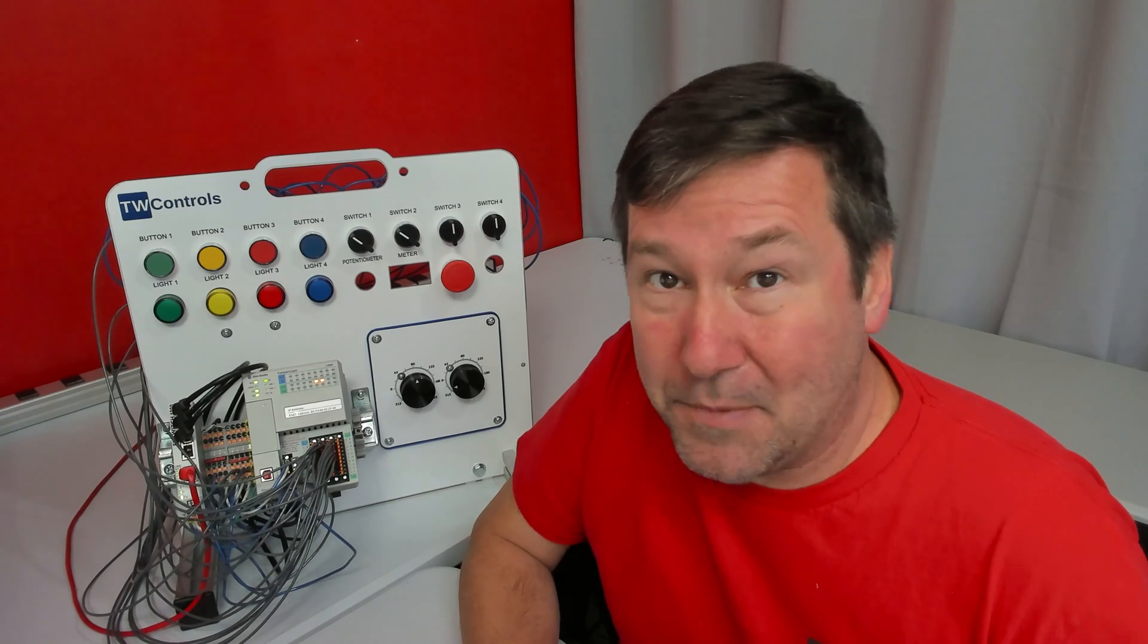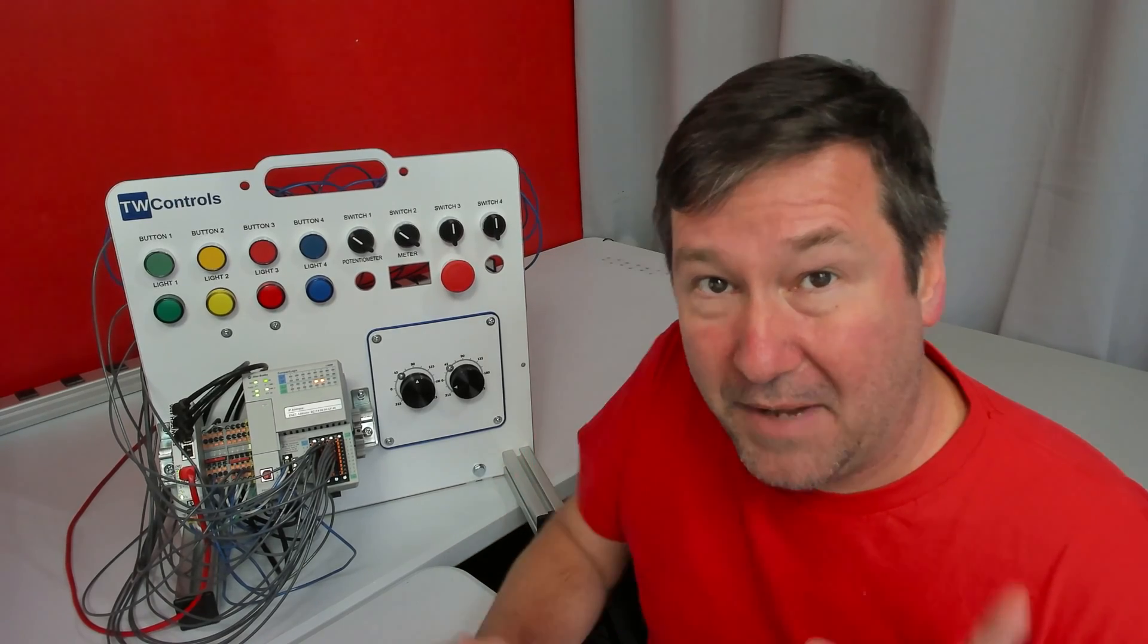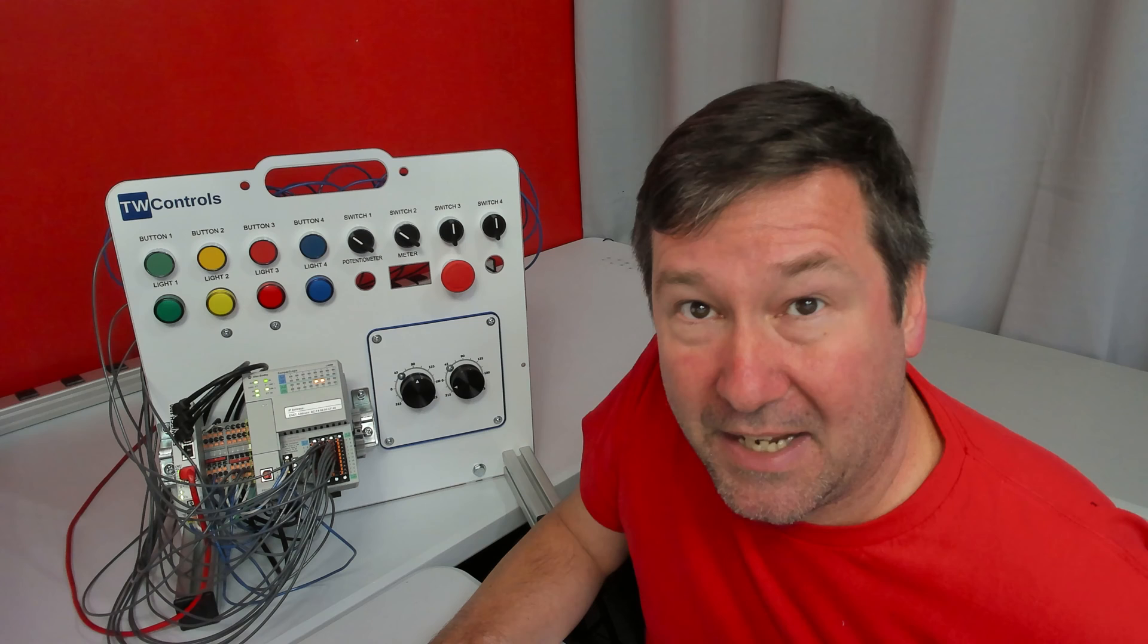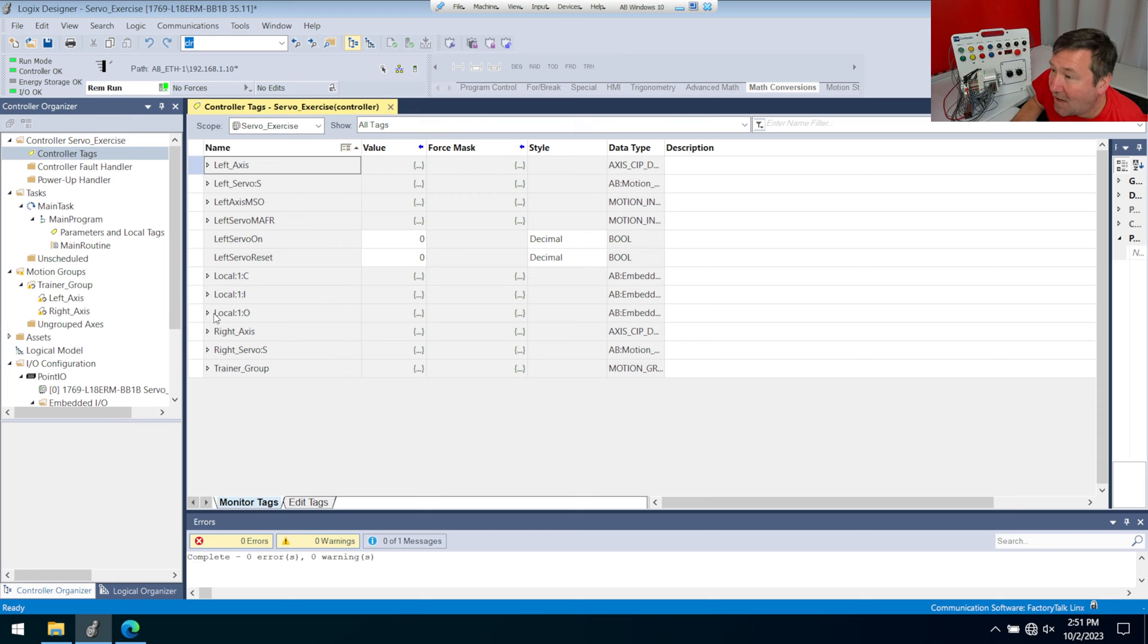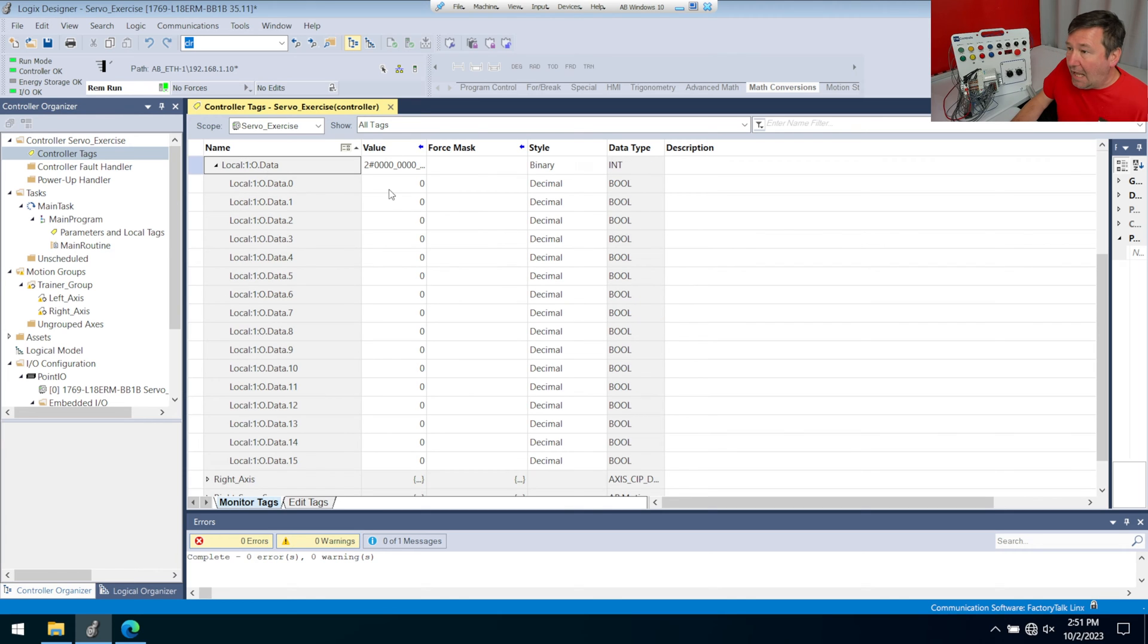Now we can test our outputs without writing any program. There are videos in the basic Studio 5000 series that go through this. While you're online, on the left pane find the controller tags, and then let's find Local:1:O, because that's going to be the embedded discrete outputs.